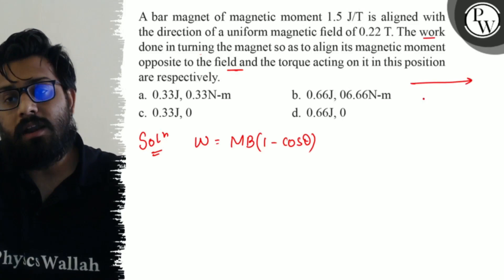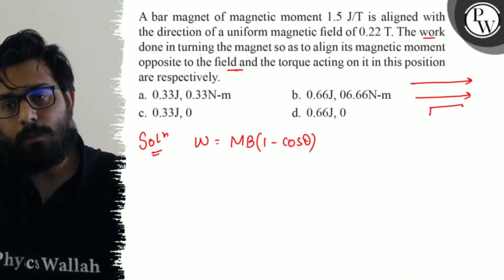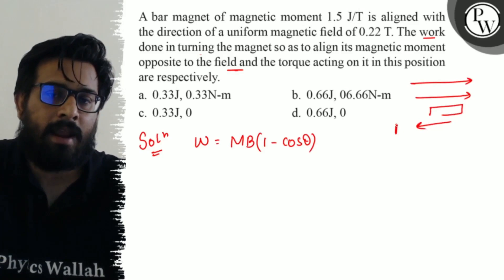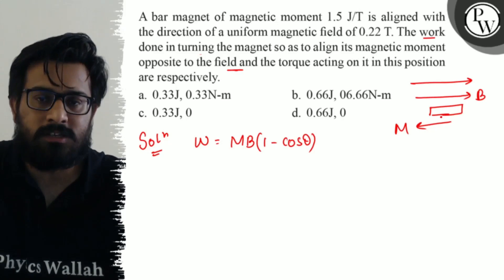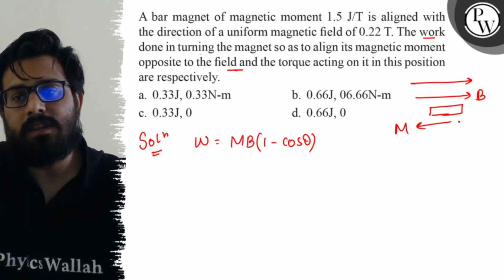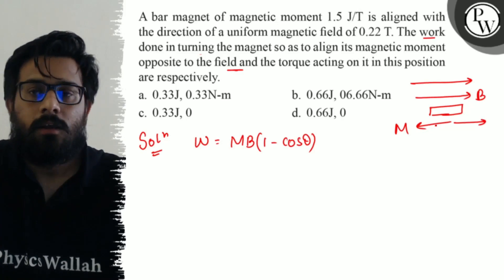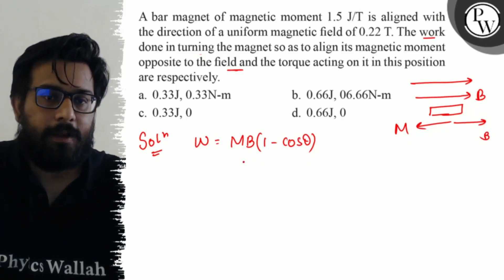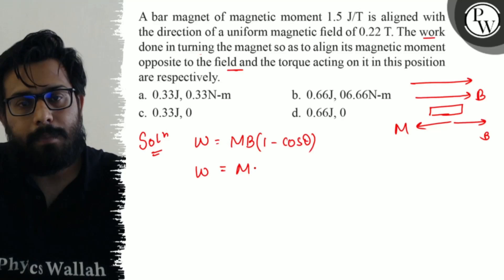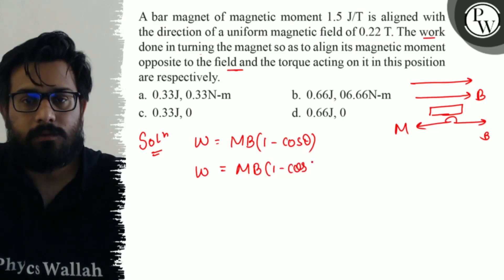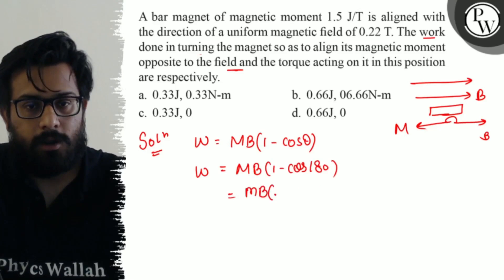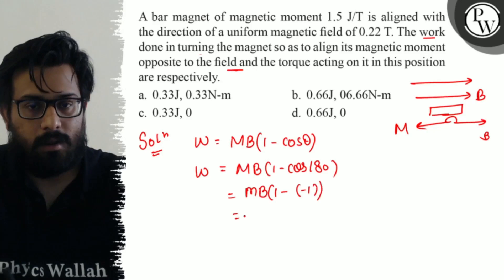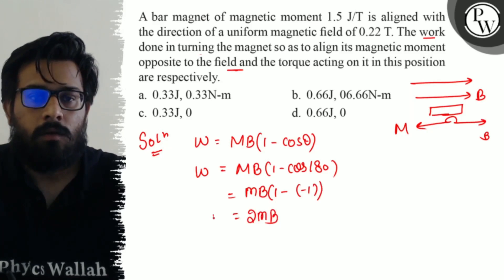So if the field in this direction, you have to align your magnet so that your magnetic moment comes out like this. So you have to align your magnet such that the angle between the magnetic field and the magnetic moment comes out to 180 degrees. So work done in that will be equals to MB, 1 minus cos of the angle between them is 180. So it comes out being MB times 1 minus minus 1. So it comes out with 2MB is the work done.